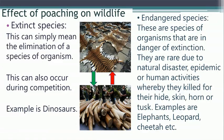Endangered species are species of organisms that are in danger of extinction. They are still in existence but are rare — very few in number. If humans continue to poach these few available animals, they can go into extinction. They can also become rare due to natural disasters, epidemics, or human activities such as killing them for their skin, horns, and so on. Common examples of rare or endangered species are the leopard, elephant, and cheetah.